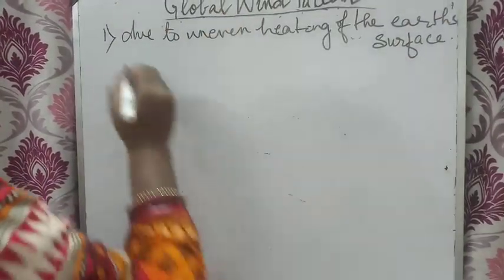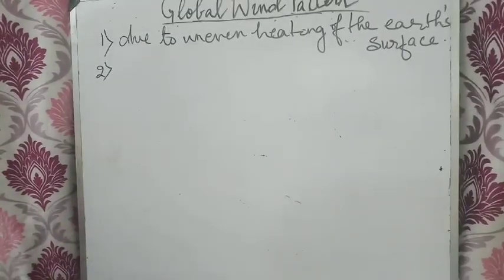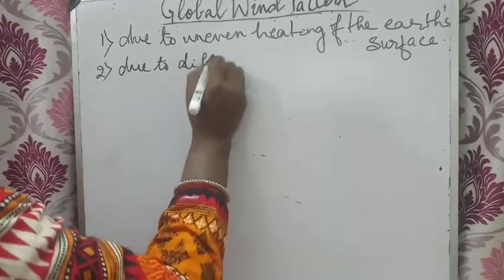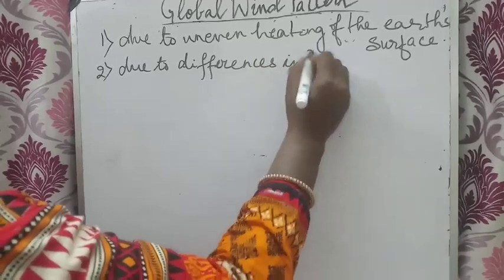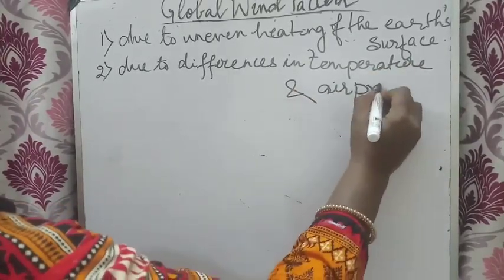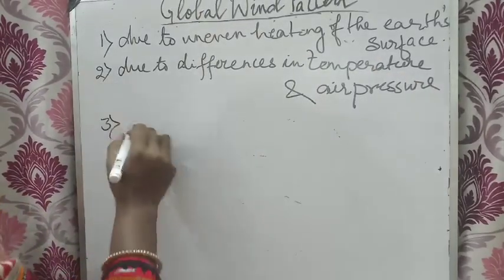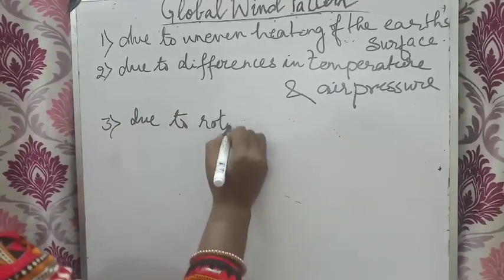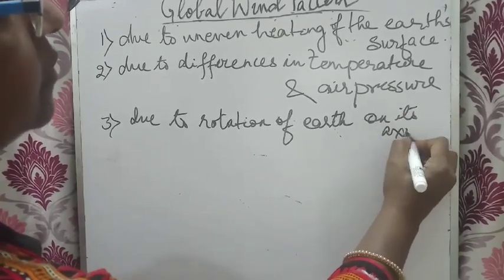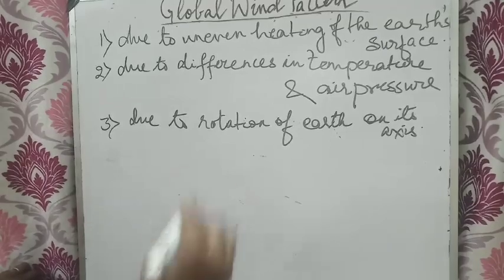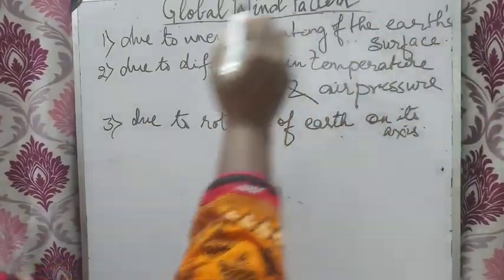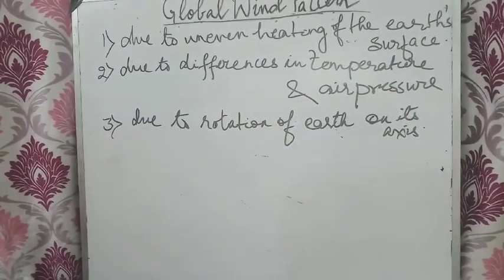Due to uneven heating of the earth's surface, temperature will be different in different areas. And due to difference in temperature, air pressure will also be different. Due to differences in temperature and air pressure, and also due to rotation of earth on its axis — these are the reasons for the wind to blow globally: uneven heating of the earth's surface, difference in temperature and air pressure, and rotation of earth on its axis.